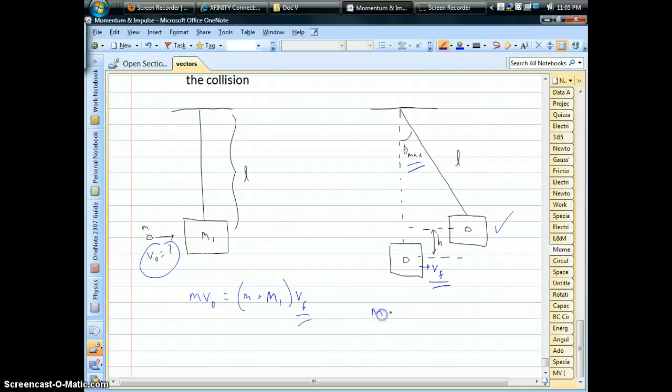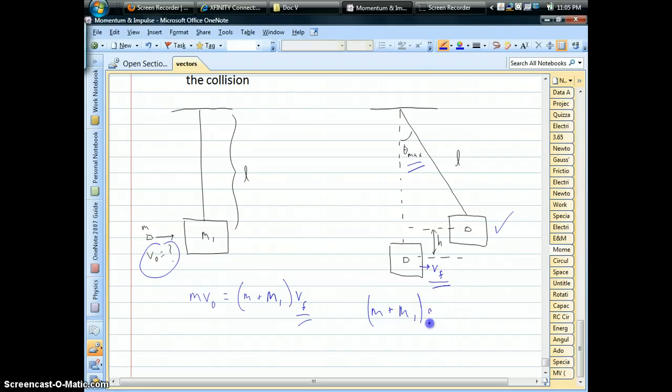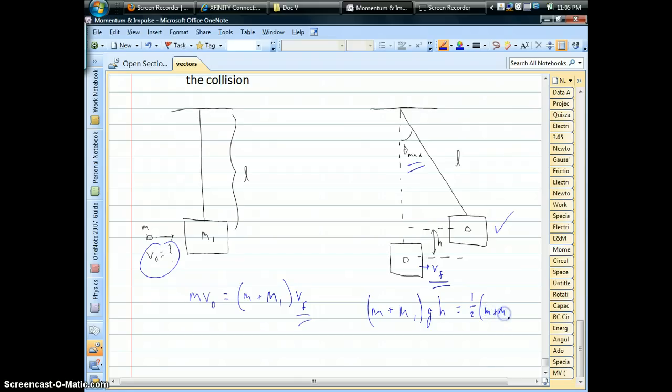So basically, after the collision, we have the mass of the system, the mass of the bullet plus the mass of the block, times 9.8 times whatever the height is. Okay, that's going to be equal to whatever the kinetic energy is at the bottom of the swing. One-half total mass times whatever v_final squared is. So through energy conservation after the collision for the swinging pendulum, we can find v_final.